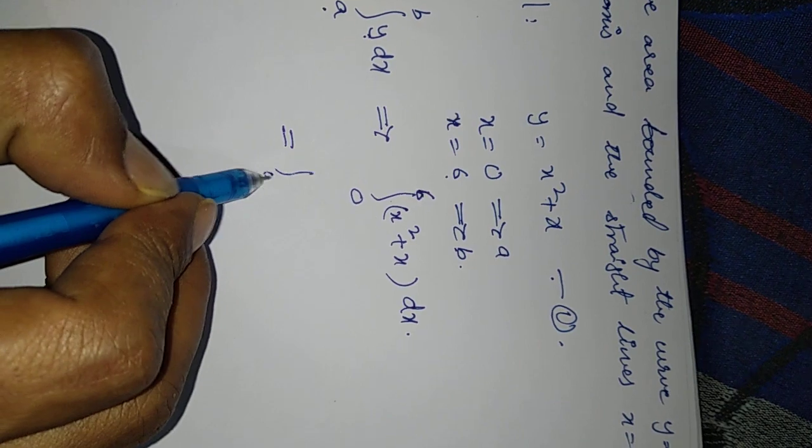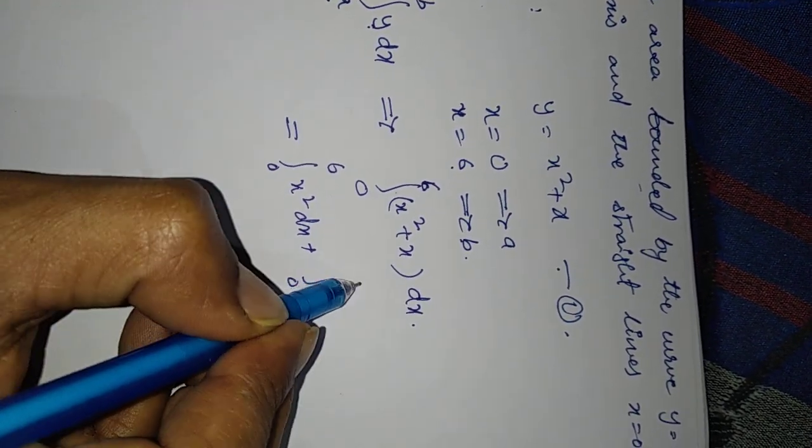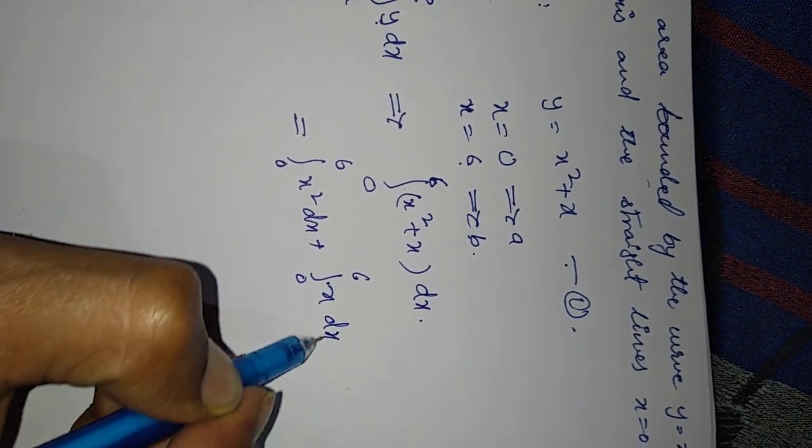Splitting the integration: integration 0 to 6 of x squared dx plus integration 0 to 6 of x dx.